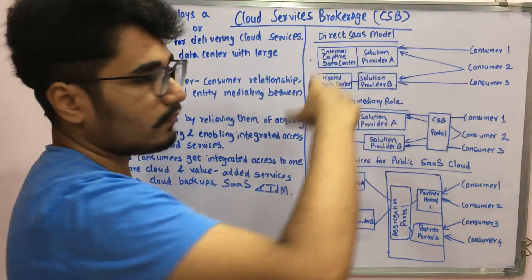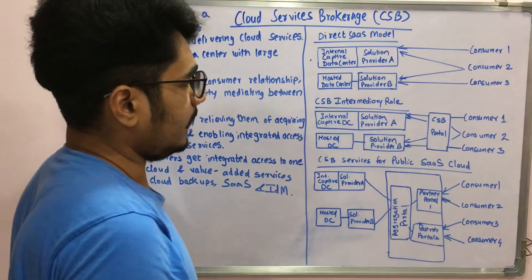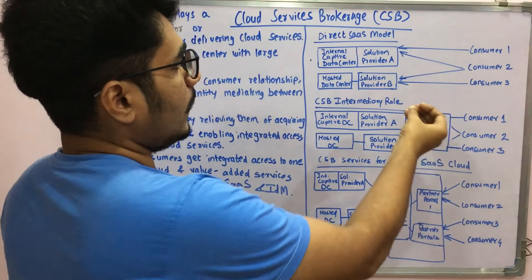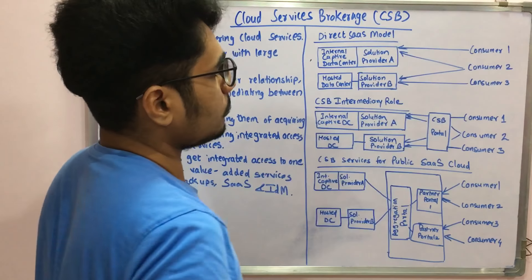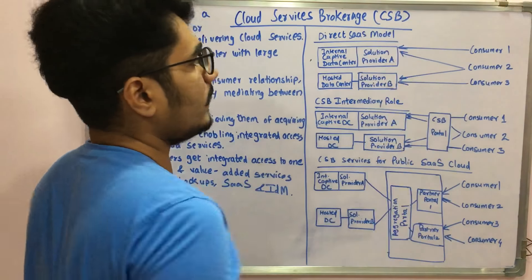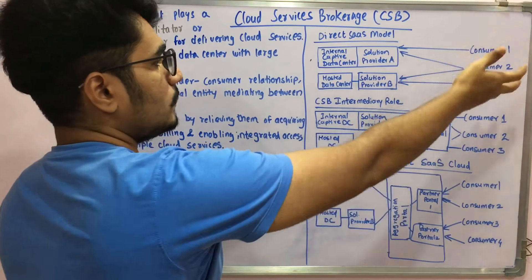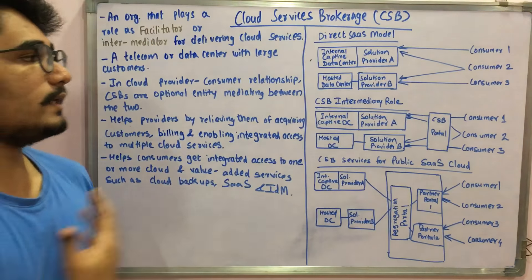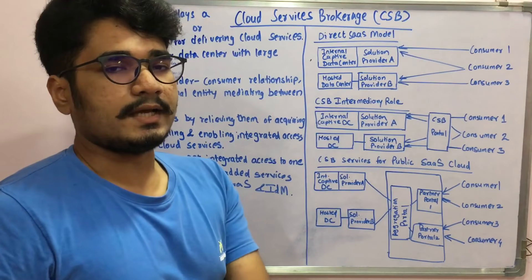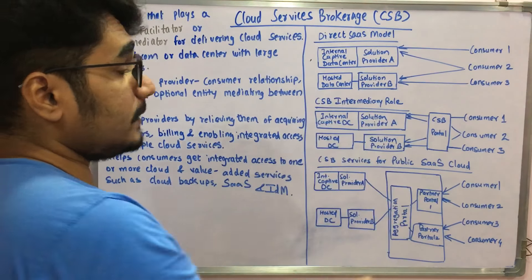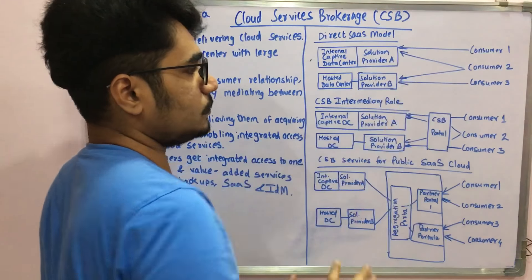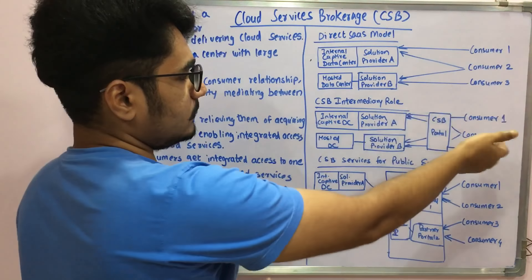There are three diagrams to consider. First is the Direct SaaS Model: you have consumers one, two, and three, an internal captive data center providing Solution Provider A, and a hosted data center outside the organization providing Solution Provider B. Consumer one and two can access Solution Provider A; consumer two and three can access Solution Provider B. There is no mediator in between — it's direct communication.